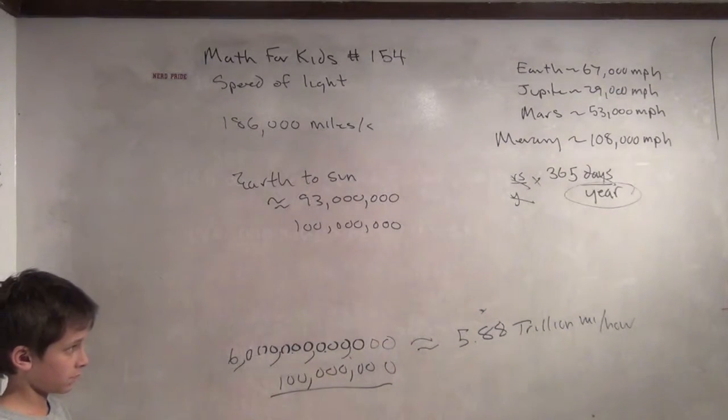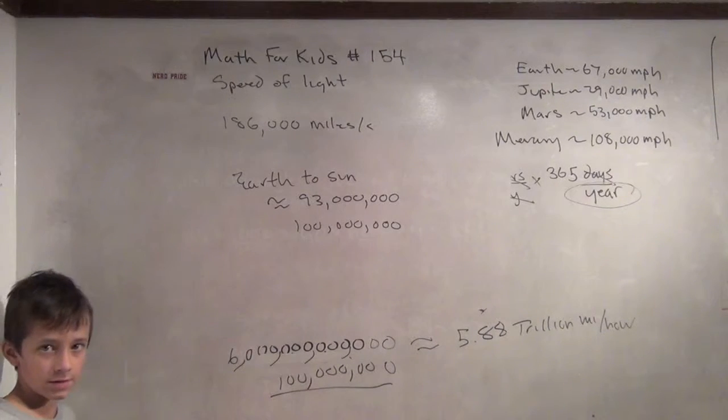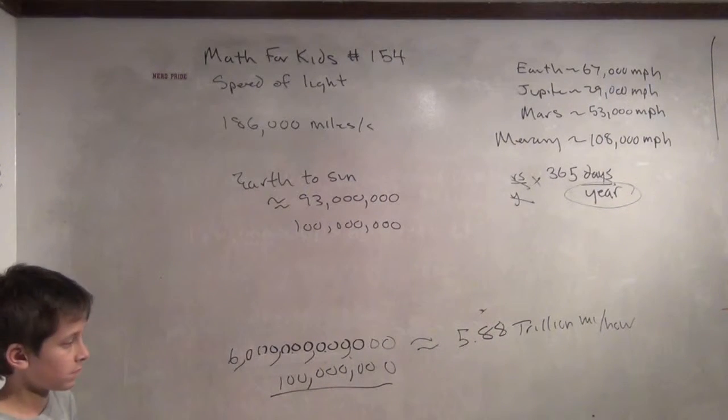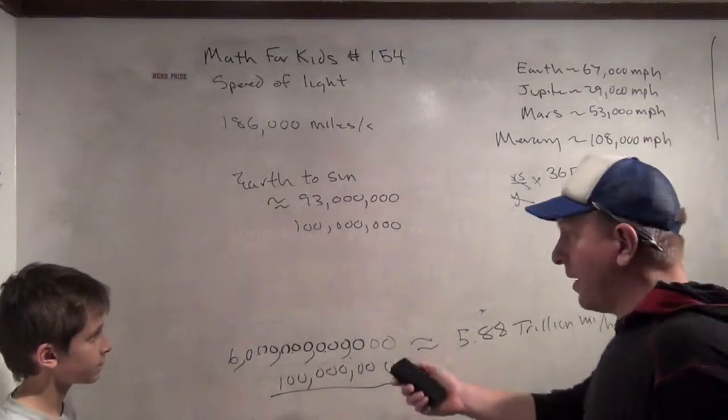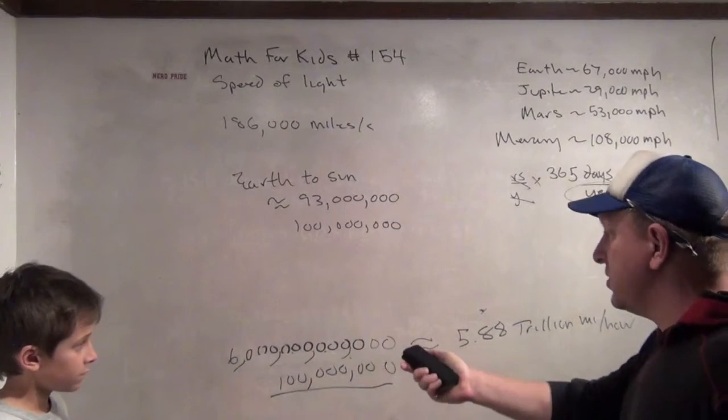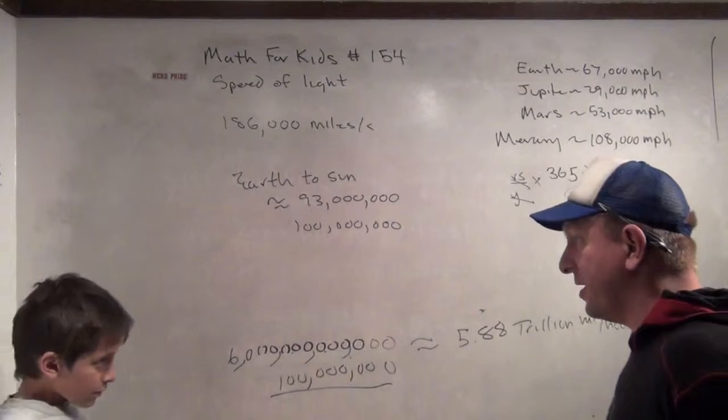Do you know how long it takes light to go from the sun to the Earth? Eight minutes. About eight minutes. Yeah. Okay. So, that's... I wanted to go through all this just to show you how far light travels in a year.